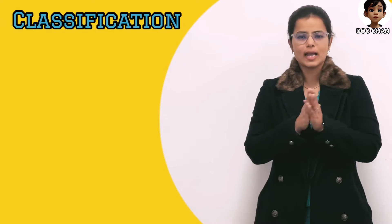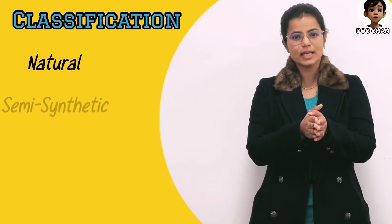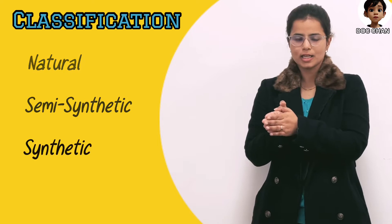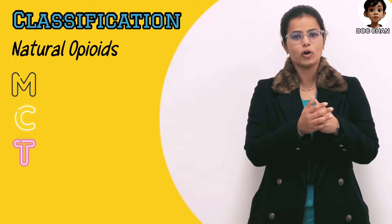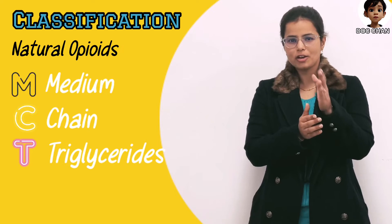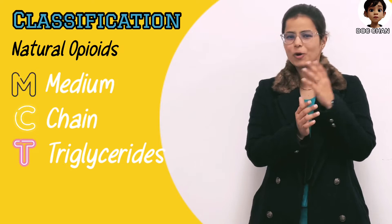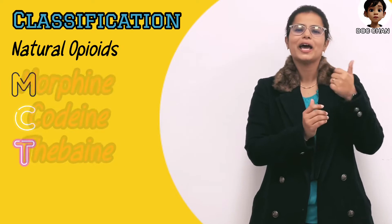We will start with classification. Opioids can be classified under natural, semi-synthetic, and synthetic. Under natural, I will give a small mnemonic here called MCT — medium chain triglycerides. I know I am not helping much with the mnemonic here.